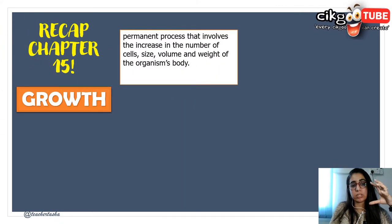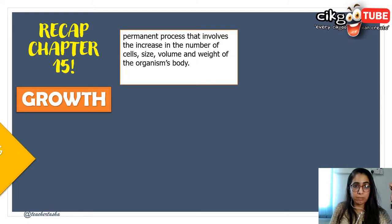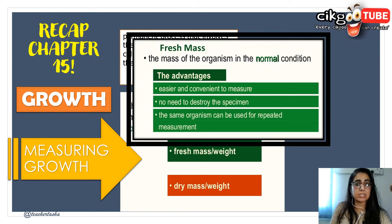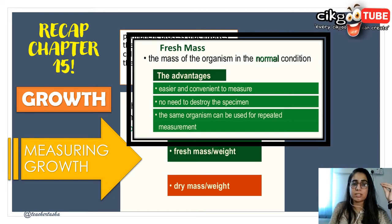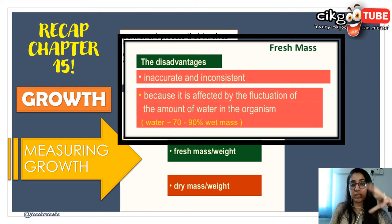Before we go into growth curves, let's revisit the growth concept from Form 4 Chapter 15. Growth is a permanent process that involves an increase in number of cells, size, volume, and weight of an organism's body. We measure growth in two ways: fresh mass and dry mass. Fresh mass does not require destroying the organism — it is easier and more convenient, and the same organism can be used for repeated measurement. However, it is inaccurate because it is affected by the fluctuation in water content of the organism.